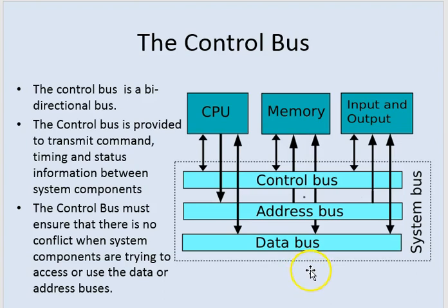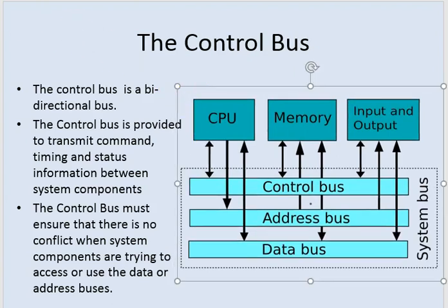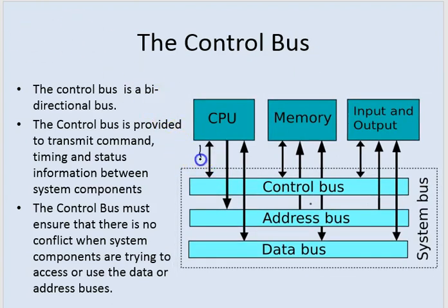Moving on to the control bus. The control bus is also a bi-directional bus. The CPU transmits onto the control bus in a bi-directional manner, and likewise the memory and input/output devices connect onto the control bus — it's all bi-directional.